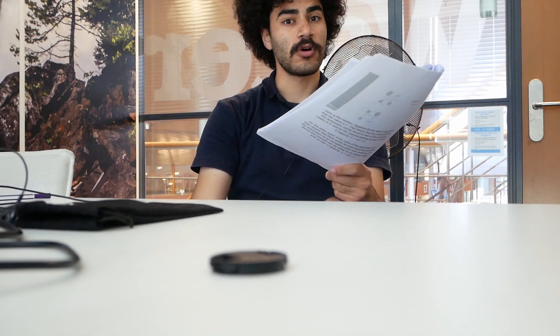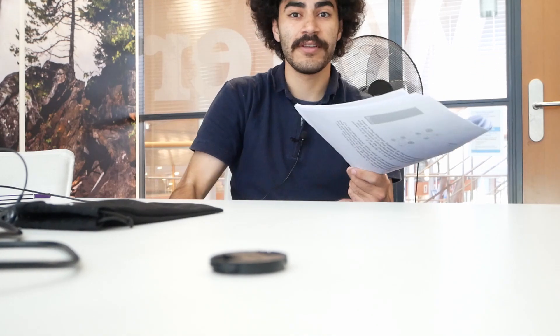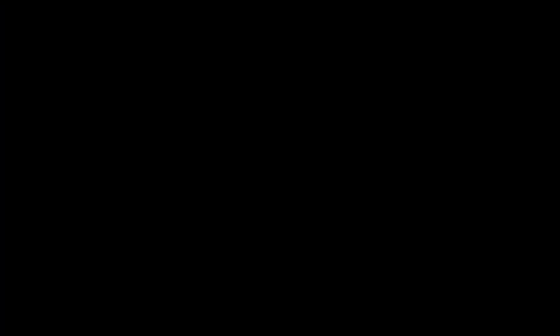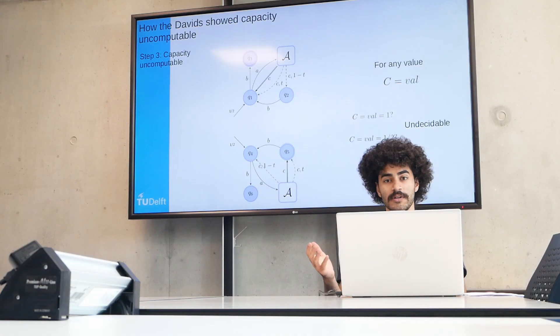If you had a computer that could compute capacity to within precision one over four, then that computer would be able to tell you whether capacity is one or half. And because that's undecidable, capacity is uncomputable to within precision one over four. And that's how they did it.